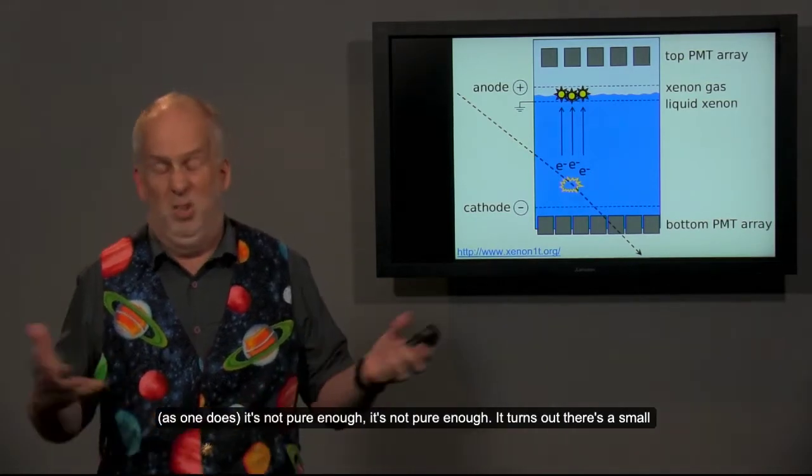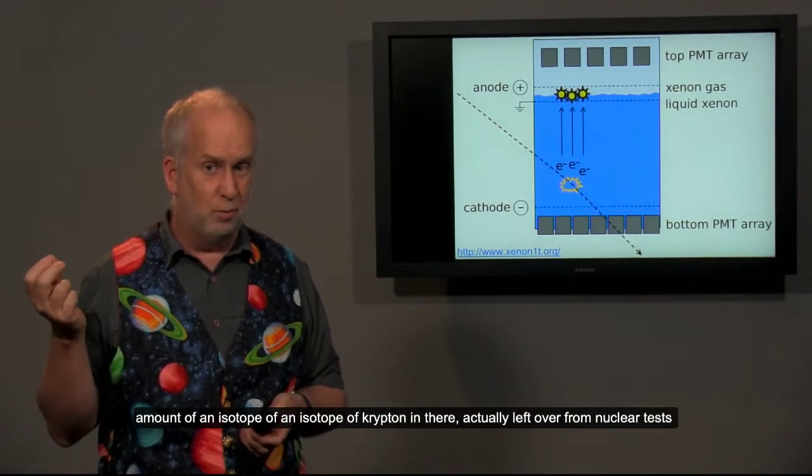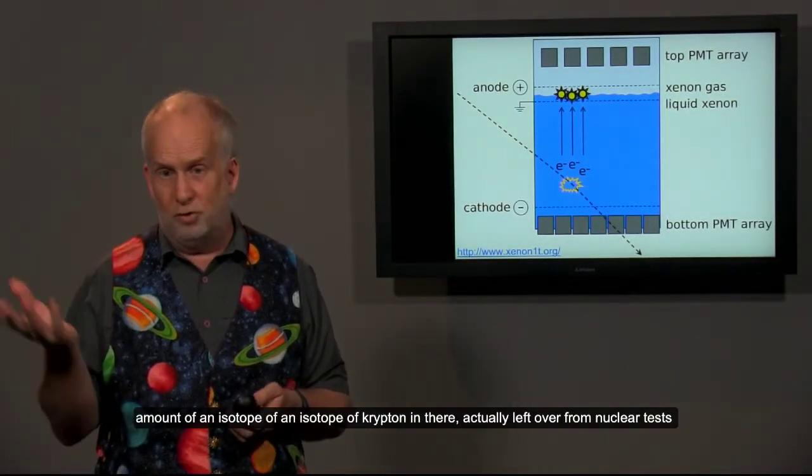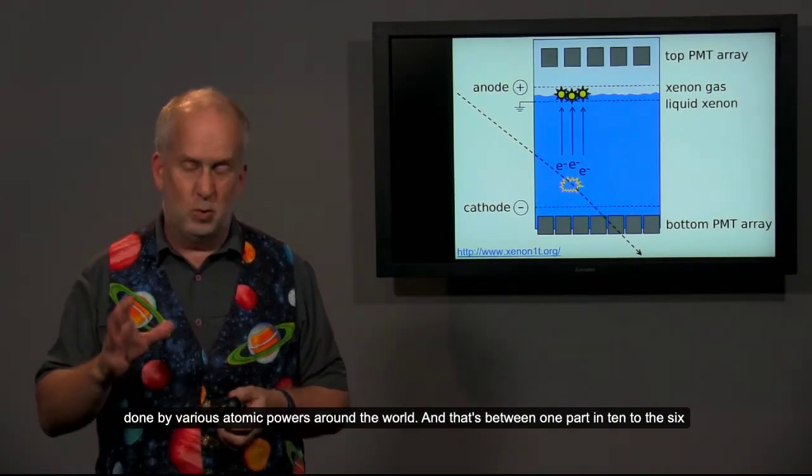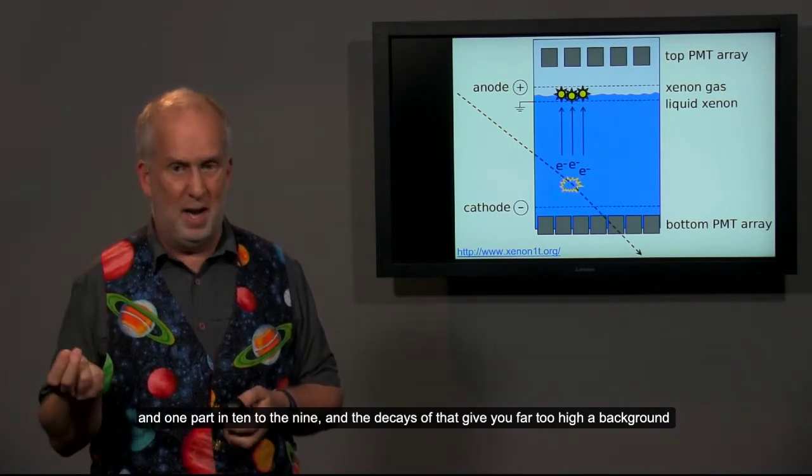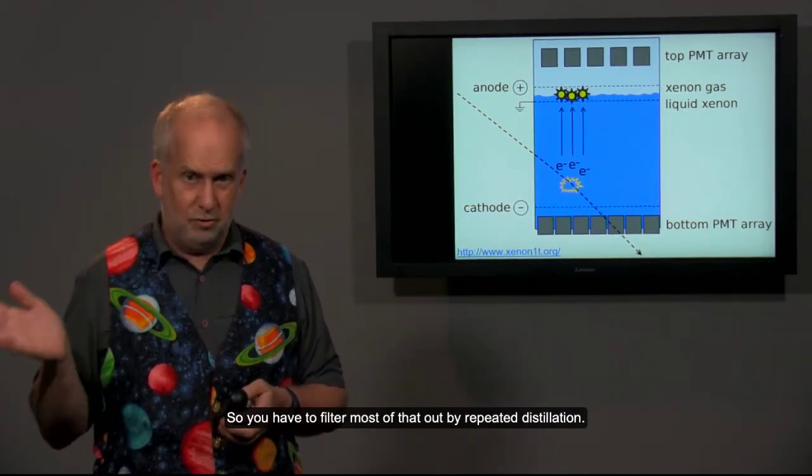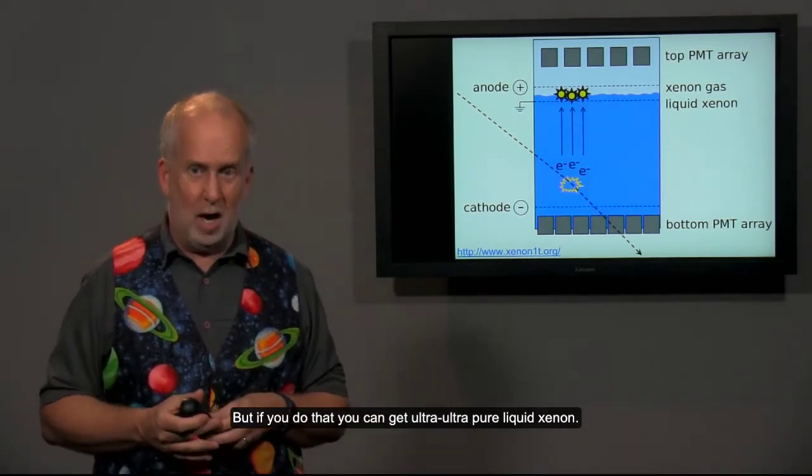Now, when you buy xenon, as one does, it's not pure enough. It turns out there's a small amount of isotope of krypton in there, actually left over from nuclear tests that were done by various atomic powers around the world. And that's between 1 part in 10 to the 6 and 1 part in 10 to the 9. And the decays of that give you far too high a background. So you have to filter most of that out by repeated distillation.